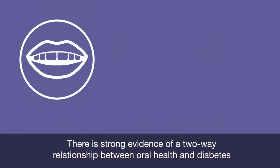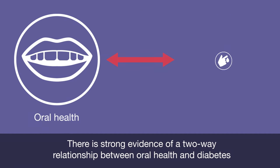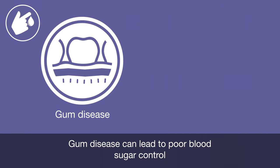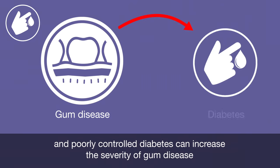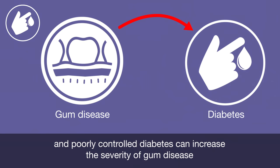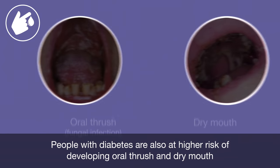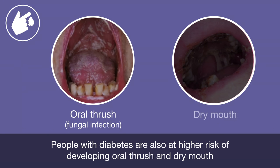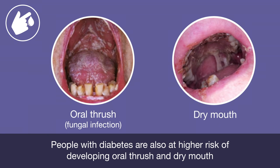There is strong evidence of a two-way relationship between oral health and diabetes. Gum disease can lead to poor blood sugar control, and poorly controlled diabetes can increase the severity of gum disease. People with diabetes are also at higher risk of developing oral thrush and dry mouth.